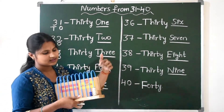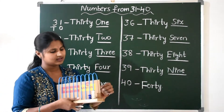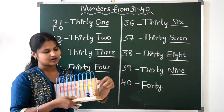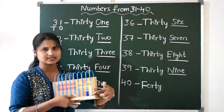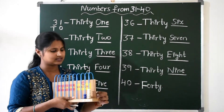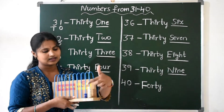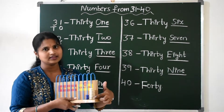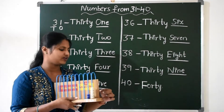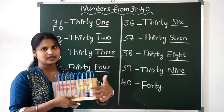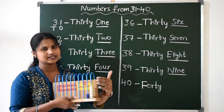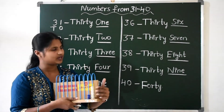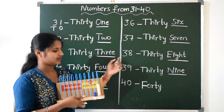Next, 36. Now here, 6 beads in ones place. 3 and 6 makes 36. Next, 37. 3 and 7 makes 37. Next, 38: 3 tens and 8 ones makes 38.